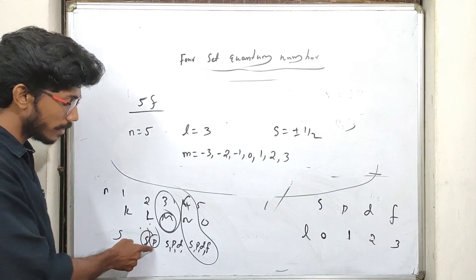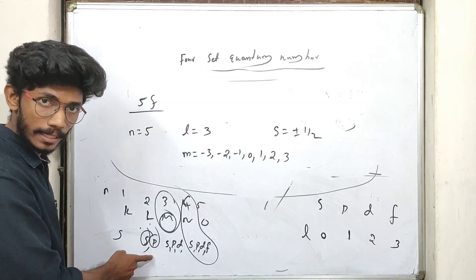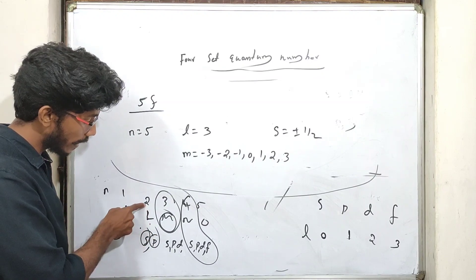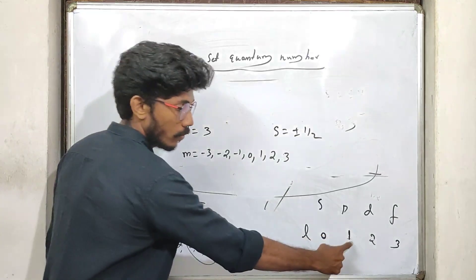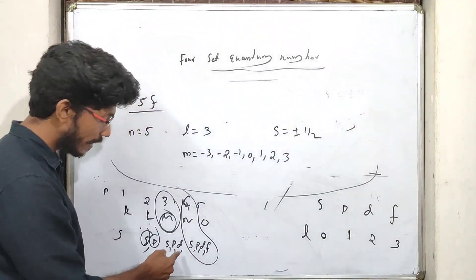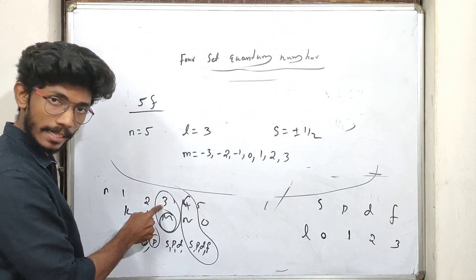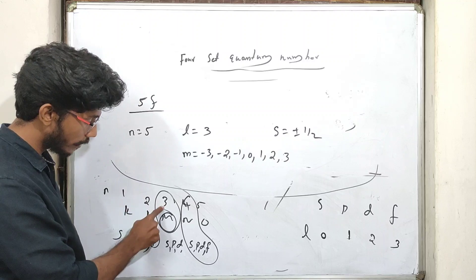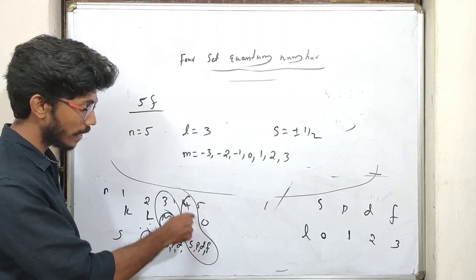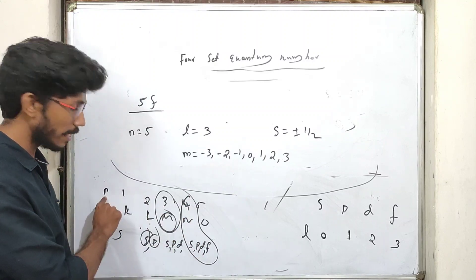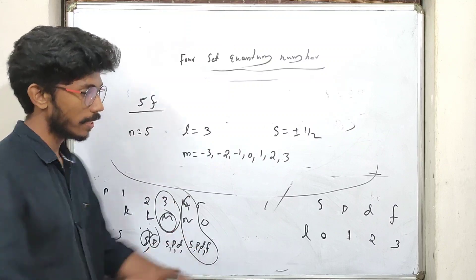If P starts with n equals 2, then L equals 1 (2 minus 1 equals 1). D starts with n equals 3, so L equals 2. F starts with n equals 4, so L equals 3.